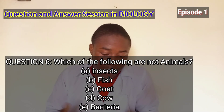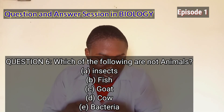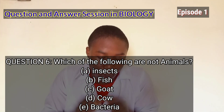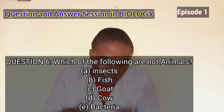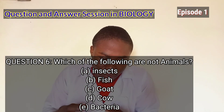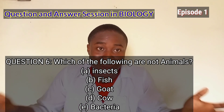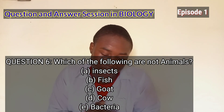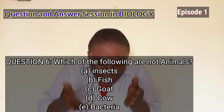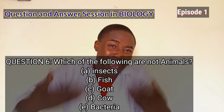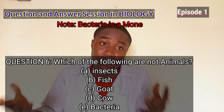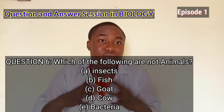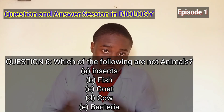Which of the following are not animals? Option A, insects; option B, fish; option C, goat; option D, cow; option E, bacteria. The answer is bacteria — option E. Bacteria is not an animal; it is a microorganism that causes various diseases, and it has various shapes due to its morphology.